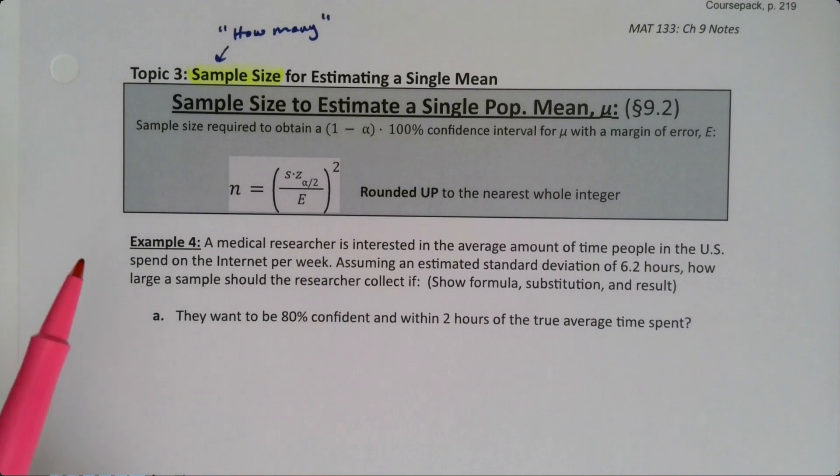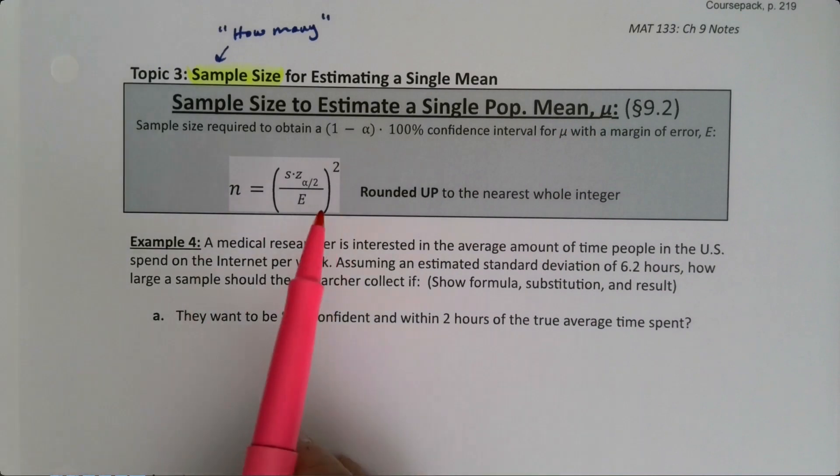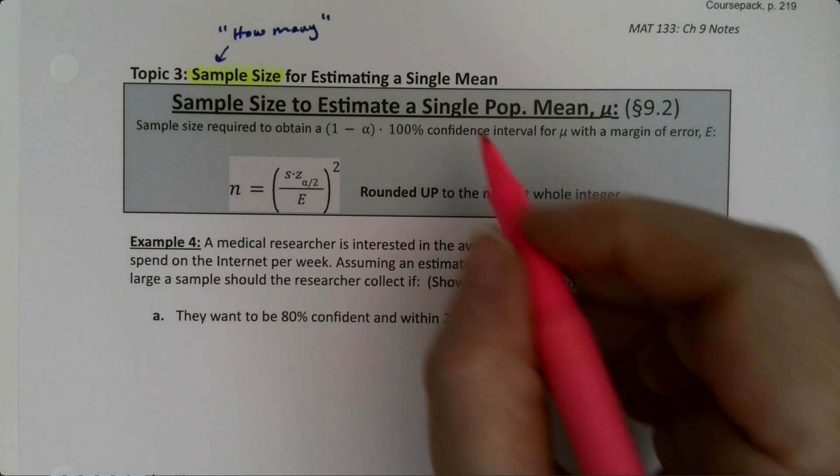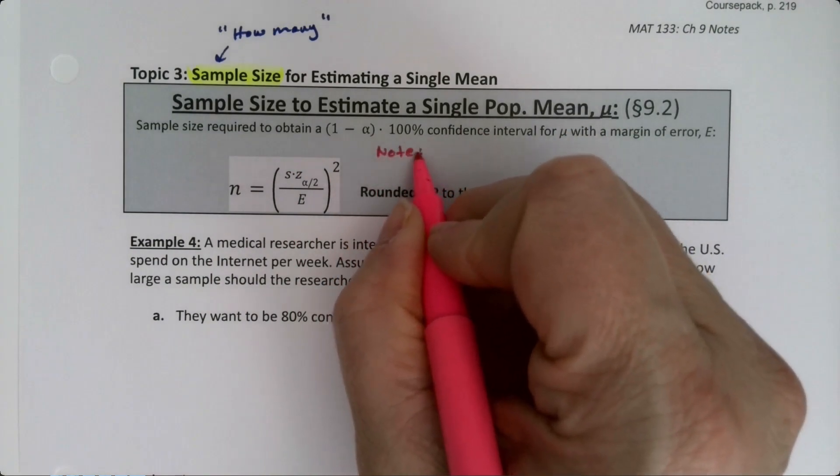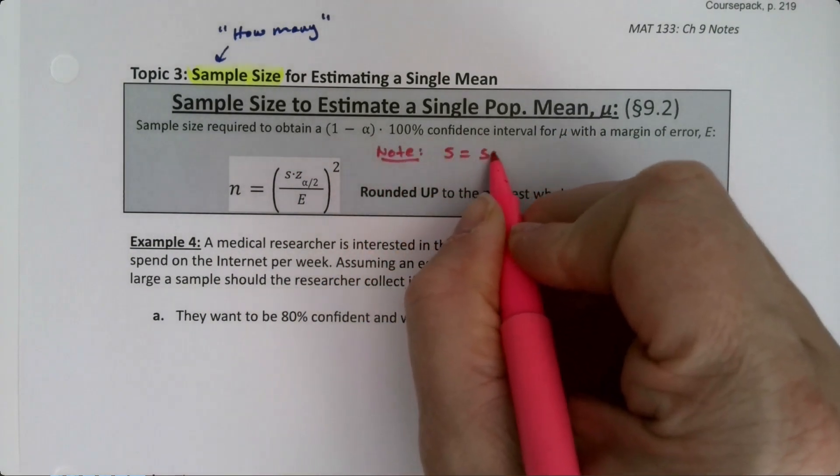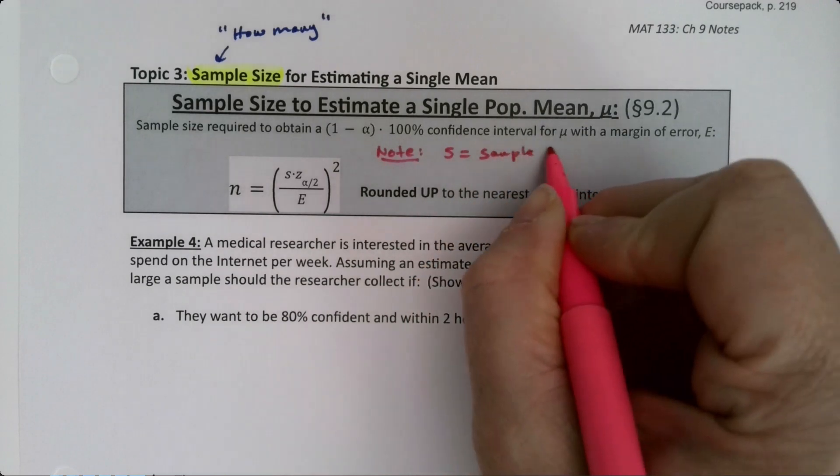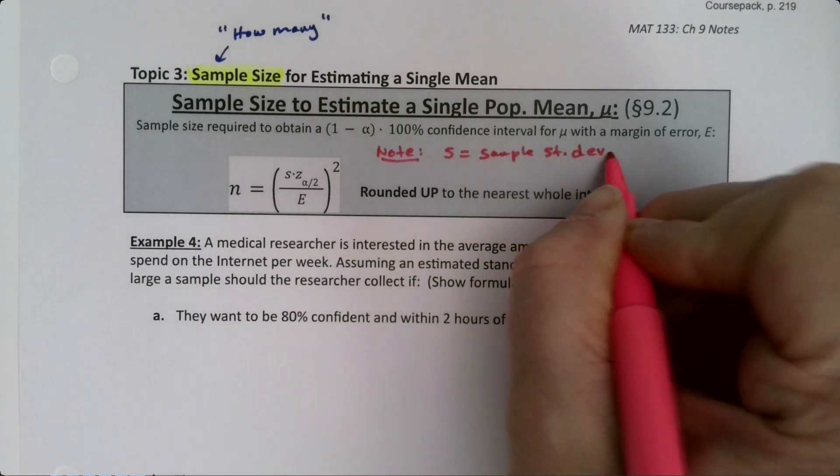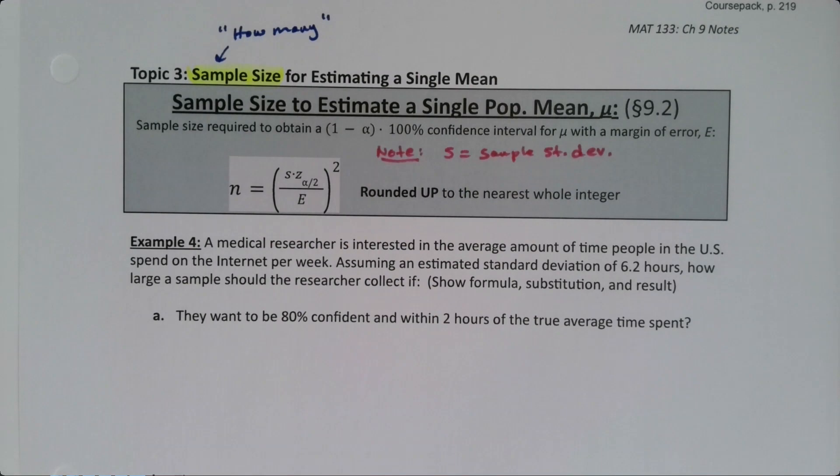Now there's a couple things to note in here in this formula. So S, well S is the sample standard deviation. We learned about that way back in chapter 3, and it still is true, that it's the standard deviation. That's what S is.